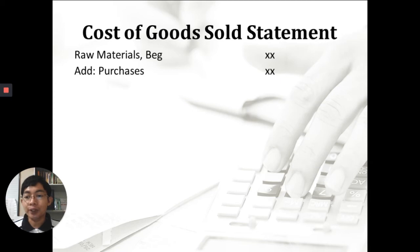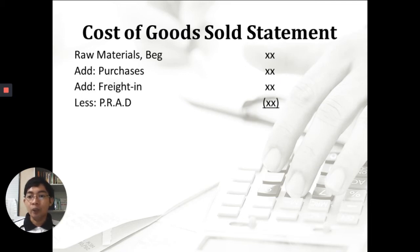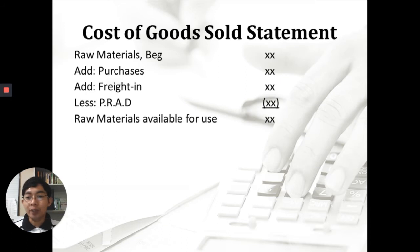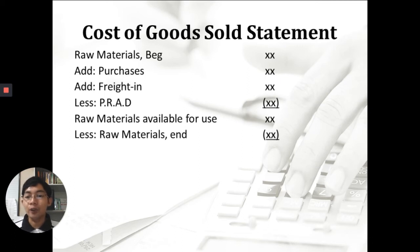You need to purchase additional raw materials from your suppliers. When you order from your suppliers, you pay for transportation — called freight in — which you add. Then you deduct what we call PRAD: purchase returns, allowances, and discounts. For example, if a supplier offers a discount for bulk orders, you deduct that. The result is raw materials available for use, less raw materials ending, to arrive at raw materials used.